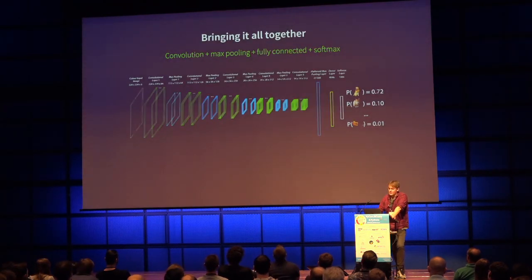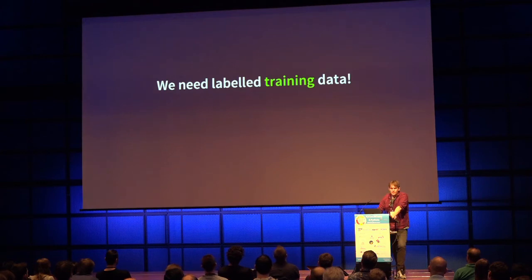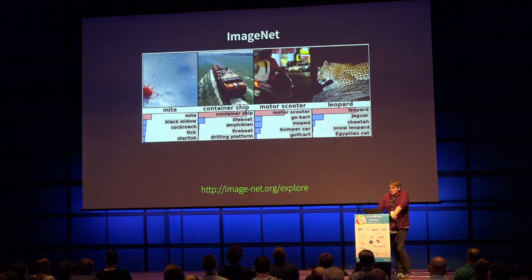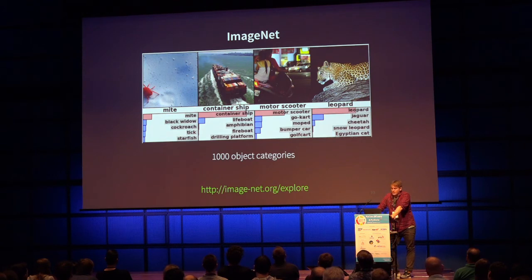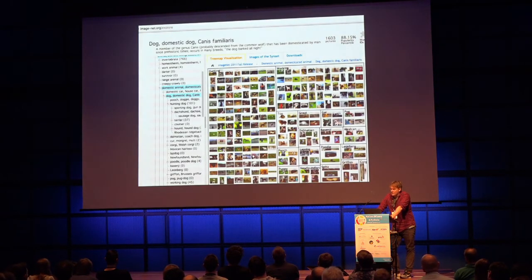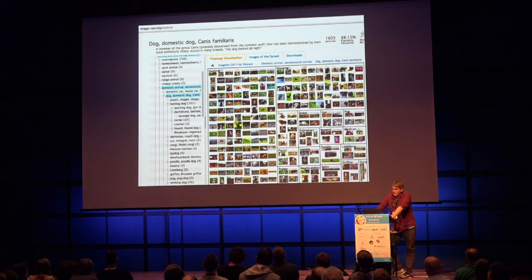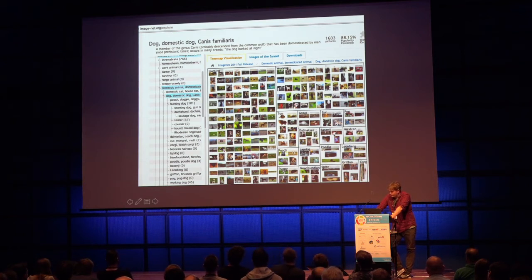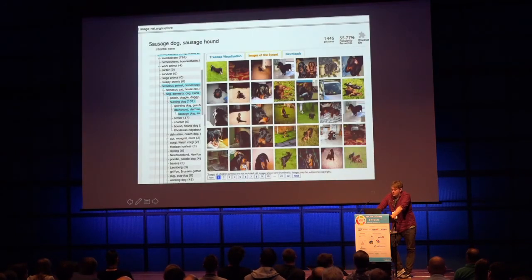That's the full architecture. Now we still need labeled training data. ImageNet has 1,000 object categories and 1.2 million training images. In just the dog category, there are hunting dogs, working dogs, lap dogs, poodles — in just the sausage hound subcategory, there are 42 pages of sausage hounds. So there's a lot of labeled training data available.